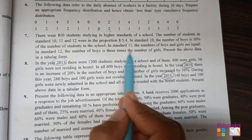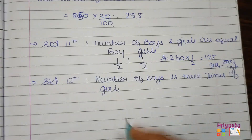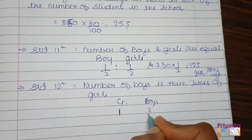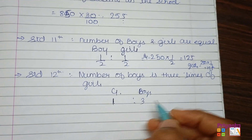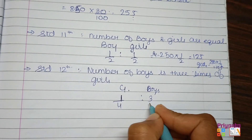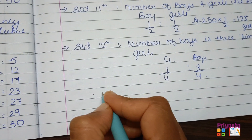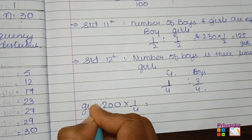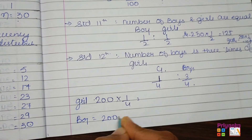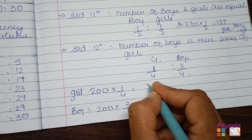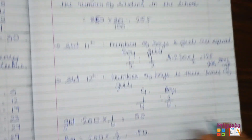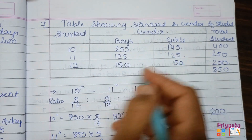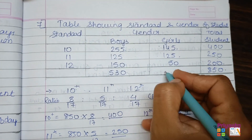In standard 12, the number of boys is 3 times the number of girls. Girls have ratio 1 and boys comparatively 3, so the ratio of boys to girls is 3:1. Total parts: 1 plus 3 equals 4. For girls: 200 multiplied by 1/4 gives 50. For boys: 200 multiplied by 3/4 gives 150. Taking these into the table: boys 150, girls 50. Total boys across all standards is 530 and number of girls is 320. Question 7 is complete.